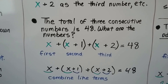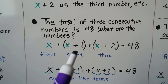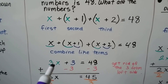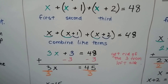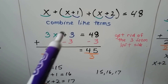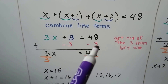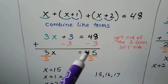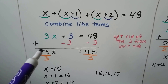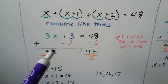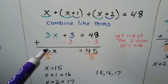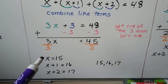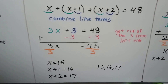The total of three consecutive numbers is 48. What are the numbers? We have three numbers, so: x plus (x plus 1) plus (x plus 2) equals 48. We combine like terms — x, x, and x gives us 3x, and 1 plus 2 gives us 3, so 3x plus 3 equals 48. We add negative 3 to both sides to create a zero pair: 3x equals 45. We divide both sides by the coefficient 3, giving us x equals 15. So x plus 1 is 16, and x plus 2 is 17 — those three numbers total 48.